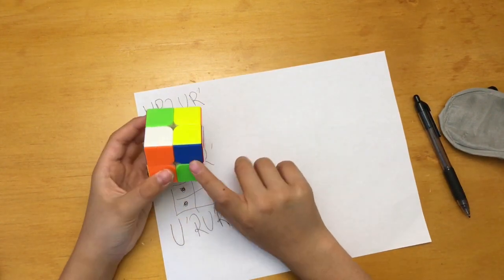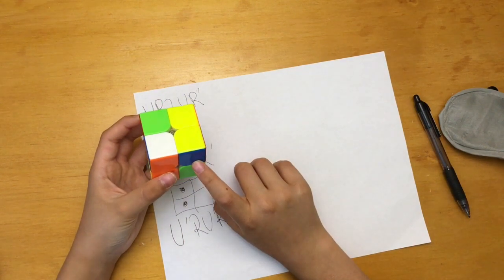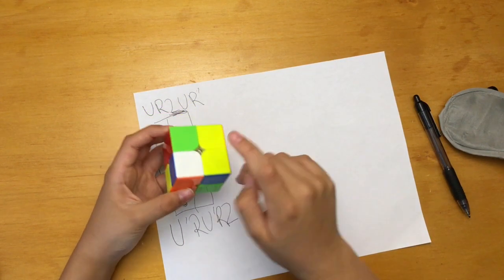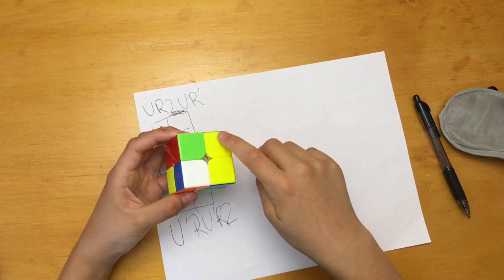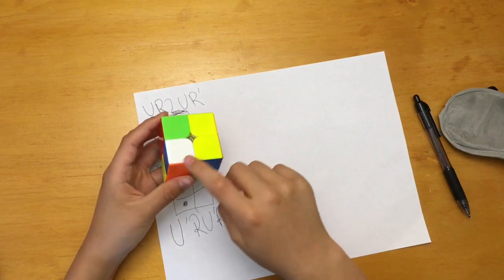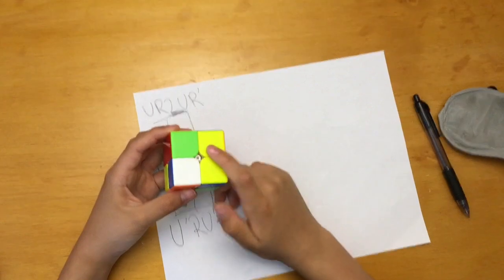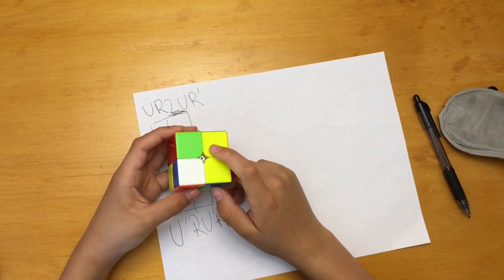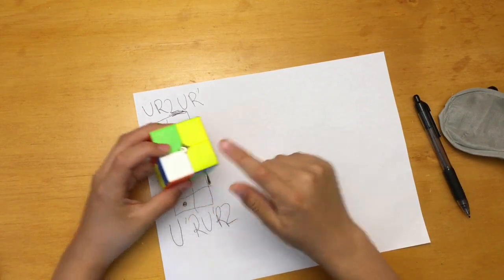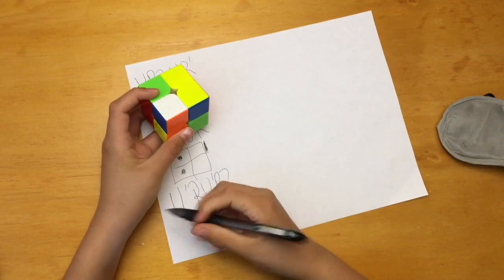So what I'm going to do is I'm going to check this one first. So U brings it to here and R U' R and then U' R2, so we have one back here.